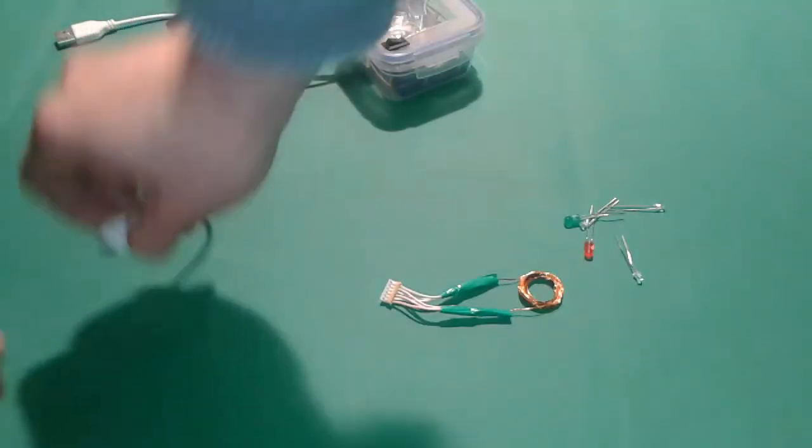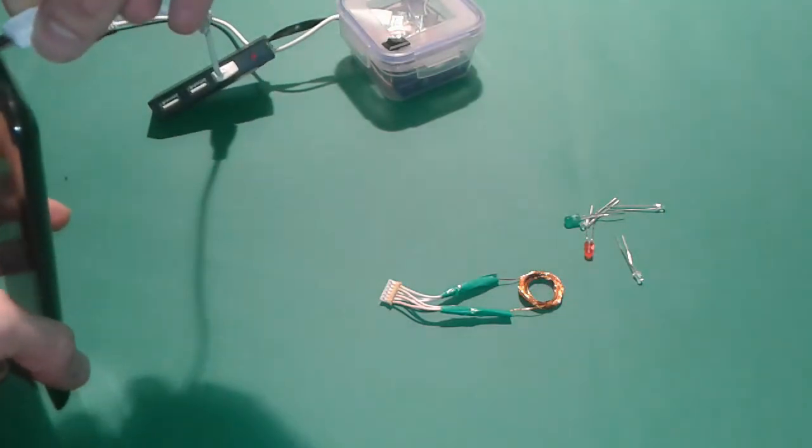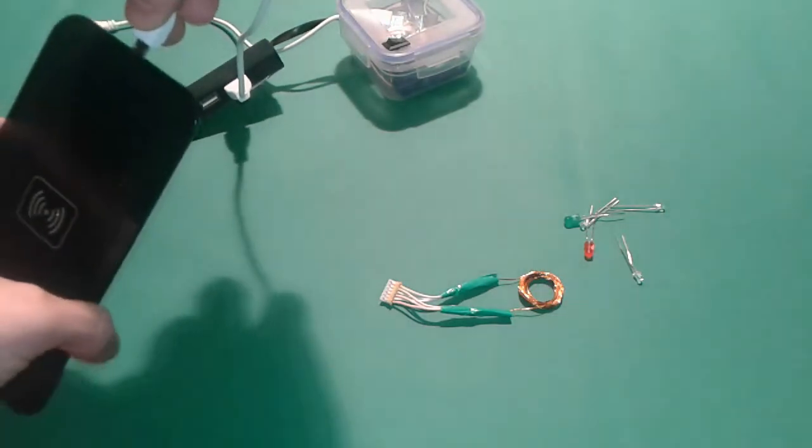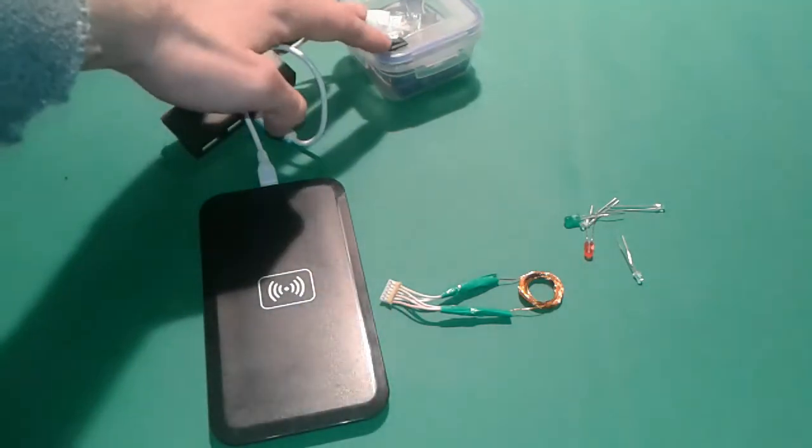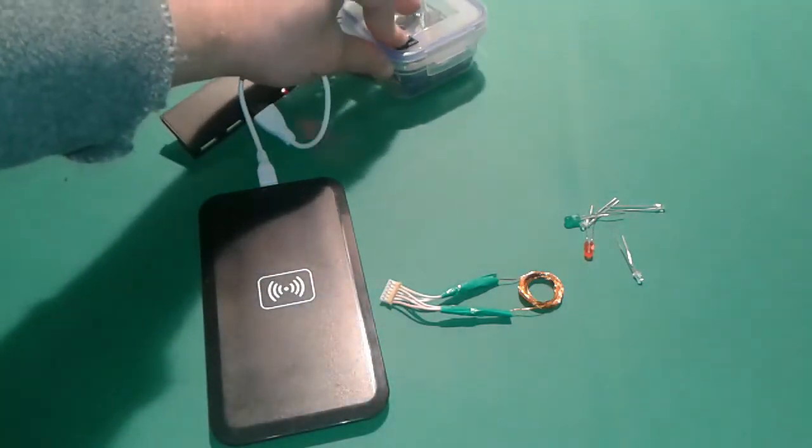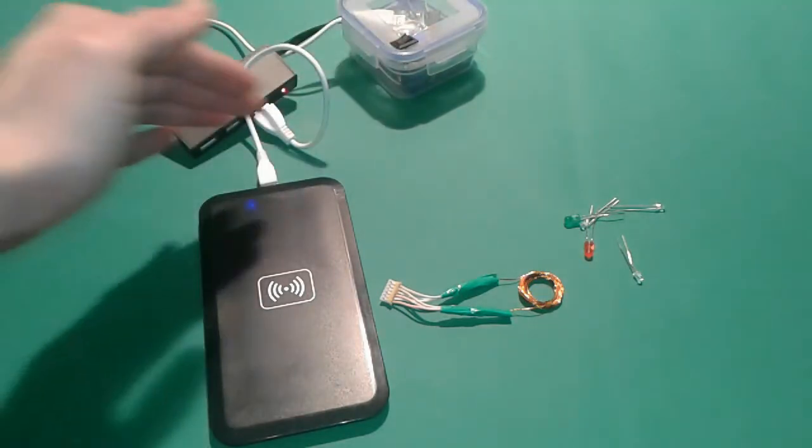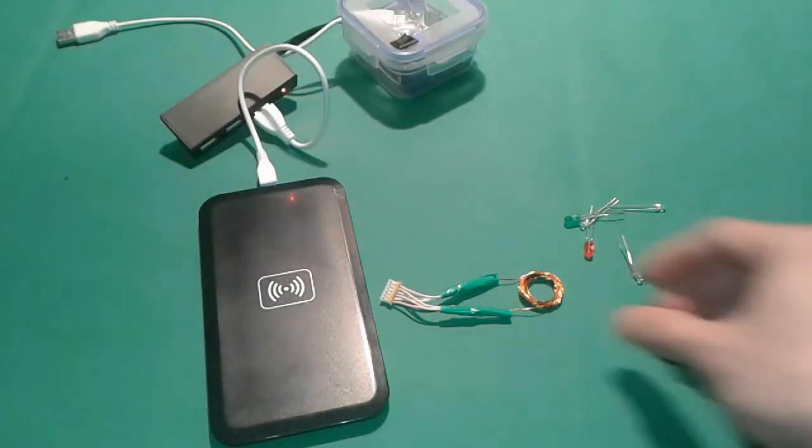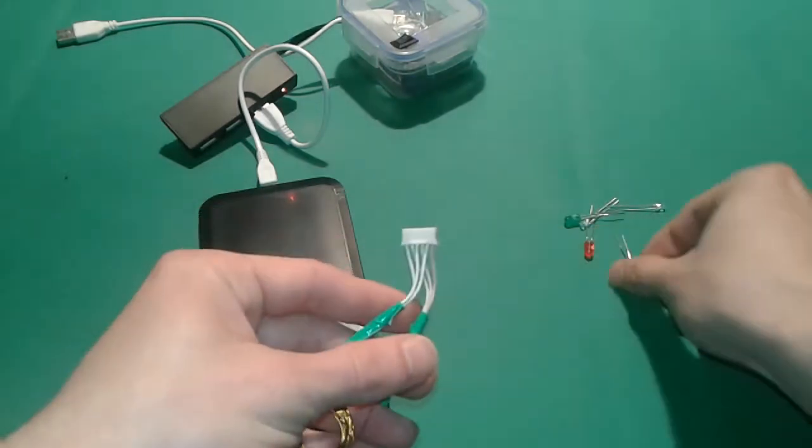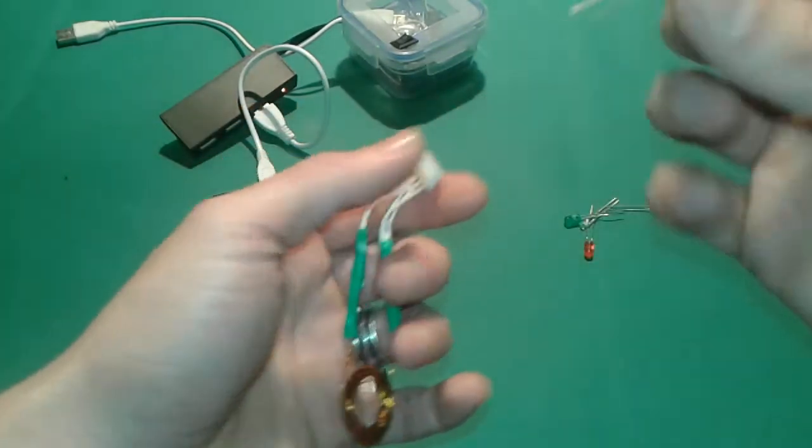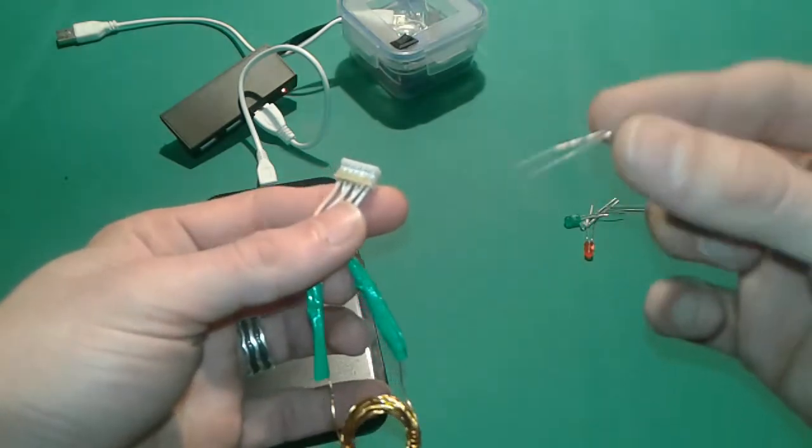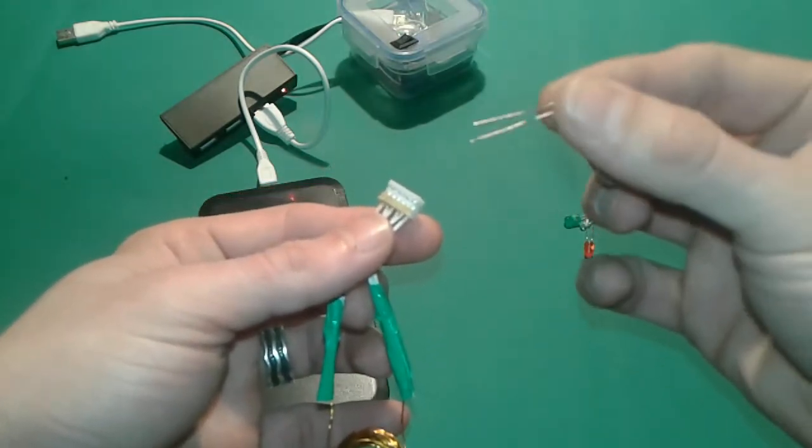So we have the power bank. We're going to connect it to the wireless charger. We're going to turn on the power bank. Alright, should be good to go. And then we're going to connect our first LED. Because this is a wireless LED tester, it doesn't matter which way you're going to connect the LED. I'm going to make you a demonstration just now.